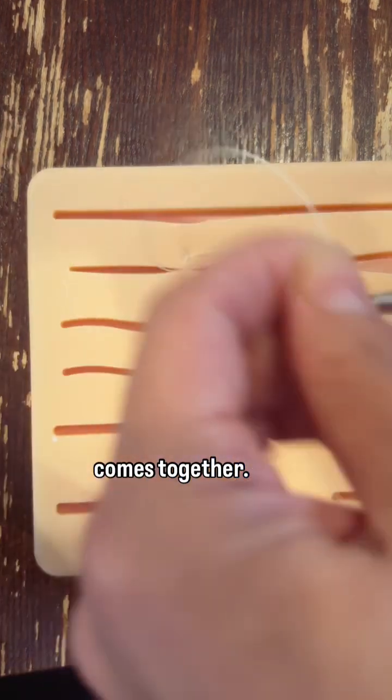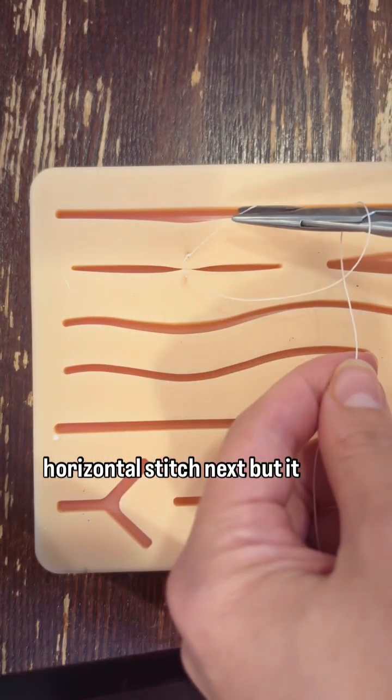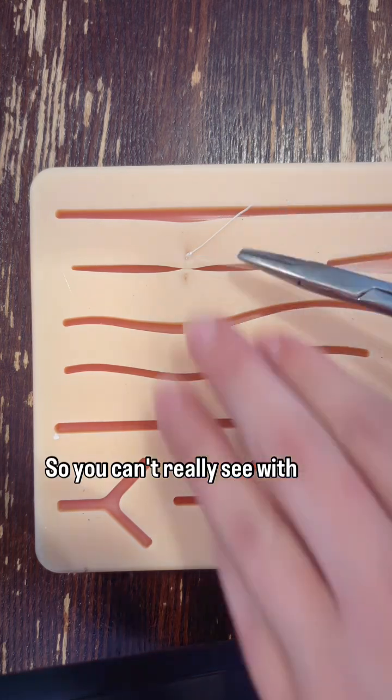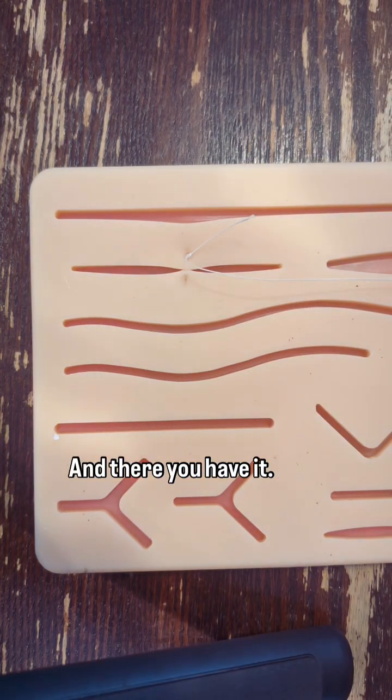The horizontal - think of an H - we'll do the horizontal stitch next. It actually looks more of an H, while the vertical is a straight line. You can't really see with the silicone, but the edges are everted. There you have it.